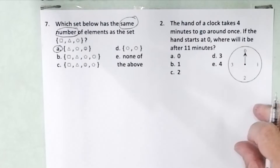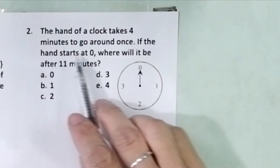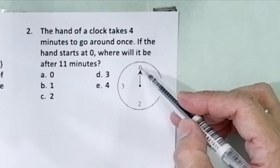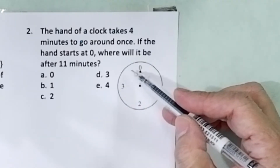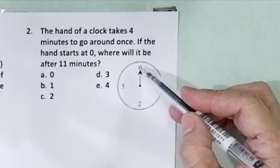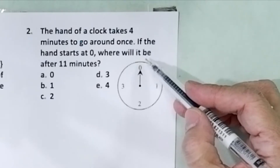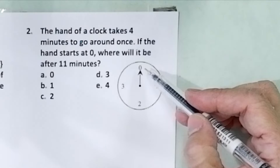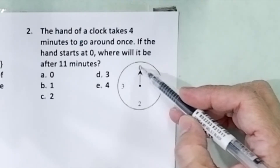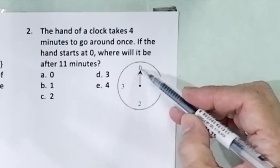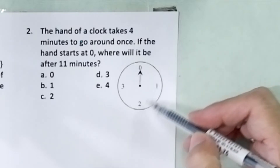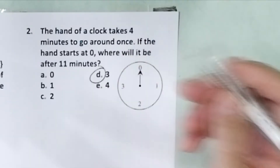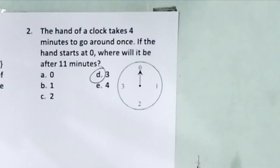Problem number 2. The hand of a clock takes 4 minutes to go around once. If the hand starts at 0, where will it be after 11 minutes? From here you have 1, 2, 3, 4 — that's one full round. Then 5, 6, 7, 8, 9, 10, 11. So the answer will be letter D.